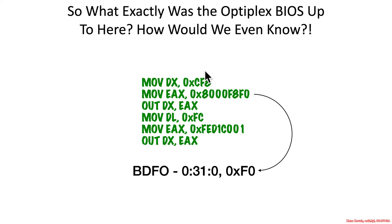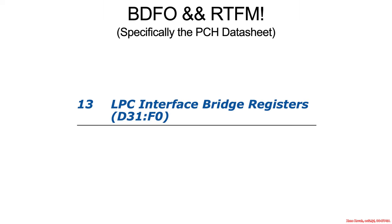So how would we figure out what this is? Well, we would of course read the fun manuals. Specifically the PCH datasheet, and we had found that bus 0 — which Intel reserves for its own use — bus 0, device 31, function 0 was the LPC interface.